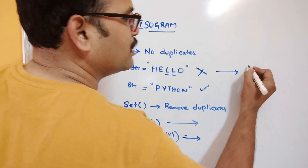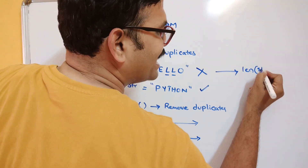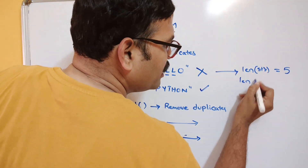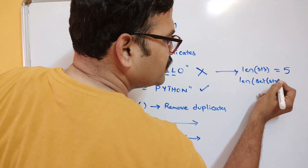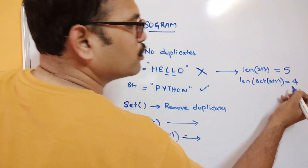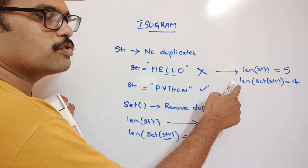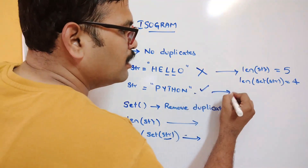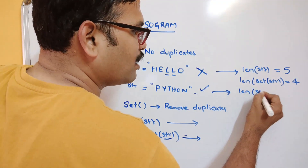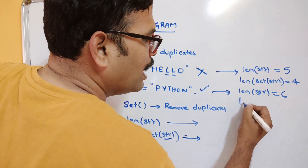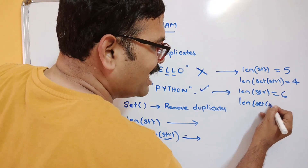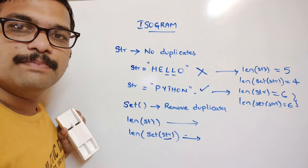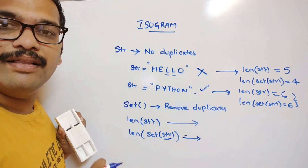For example, the length of 'hello' is five. If you apply the set function and then the length function, we get only four because the duplicate 'l' is removed. We can compare these two values — if they are not equal, that implies there is a duplicate. For 'Python', both lengths are equal, implying there are no duplicates.